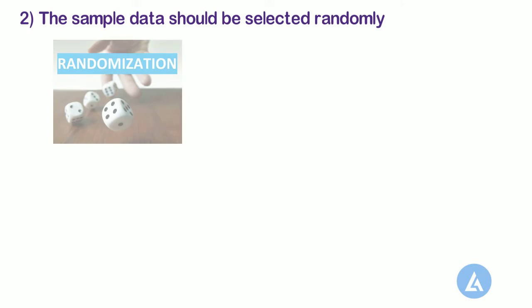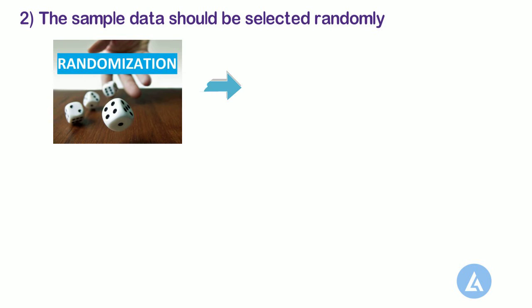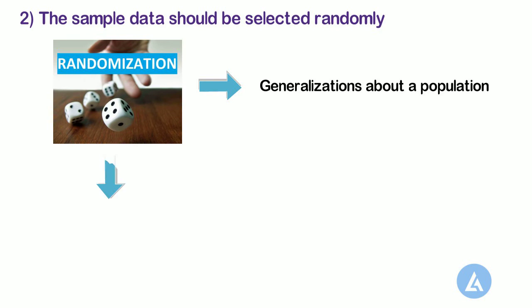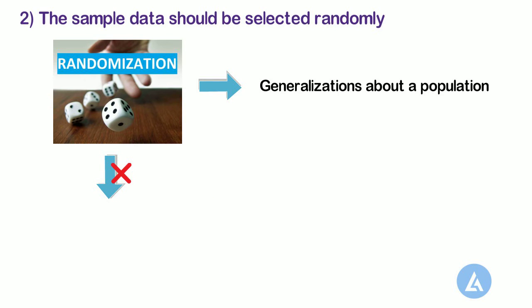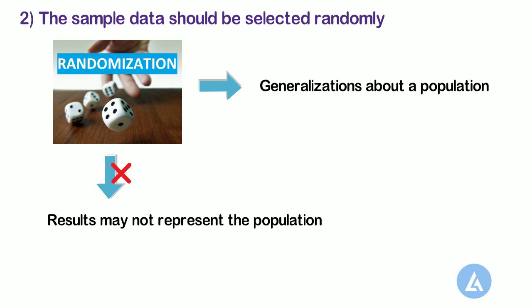2. The sample data should be selected randomly. In statistics, random samples are used to make generalizations or inferences about a population. If your data is not collected randomly, then your results may not represent the population.